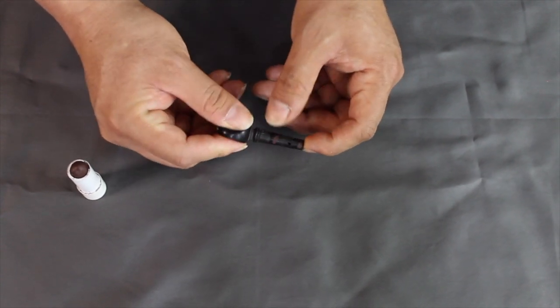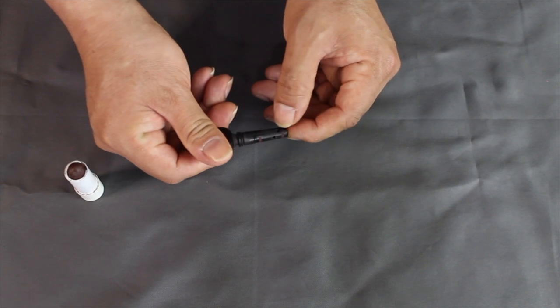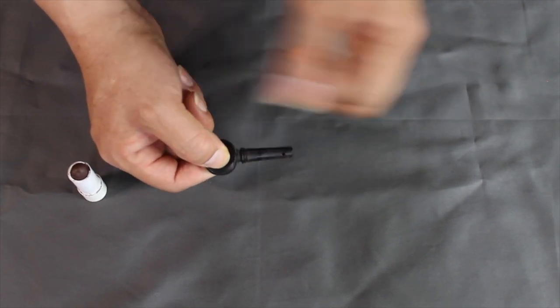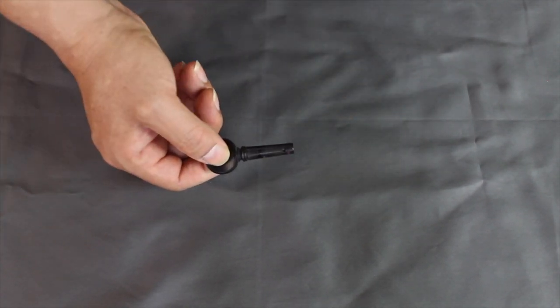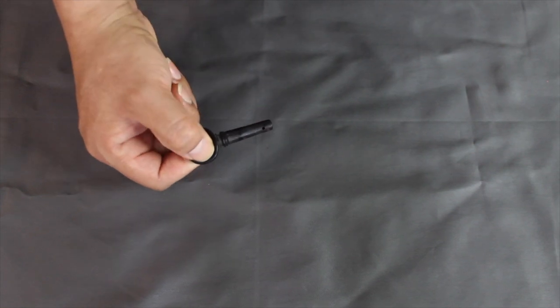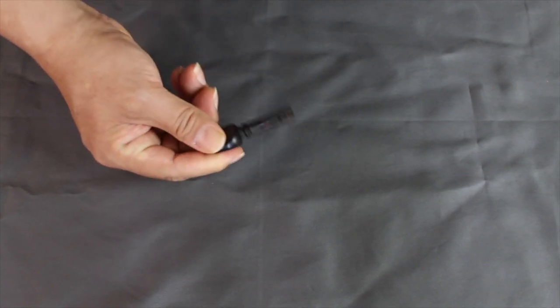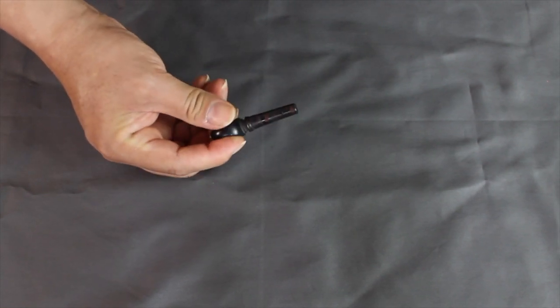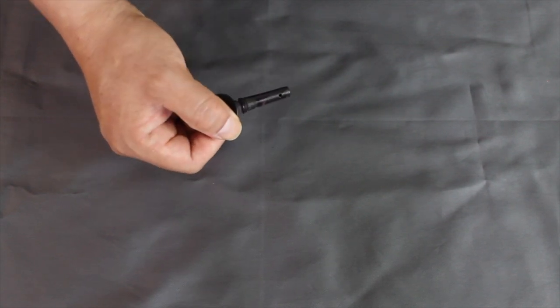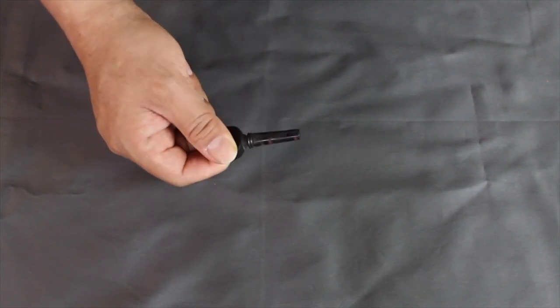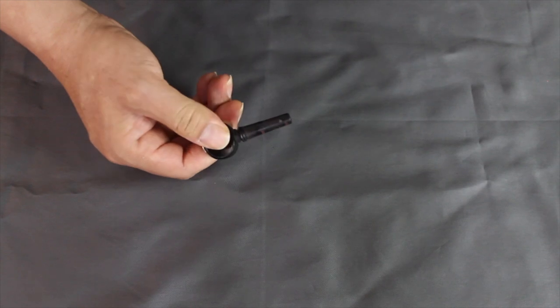So once you apply a minimal quantity of this, then you put it back in the peg box, put the string back, tune it, and you're good to go. This will last quite a while. Most of the time I find that I don't really need to keep applying this unless the peg continues to have the same problem.